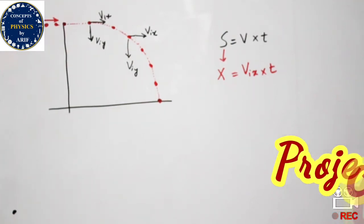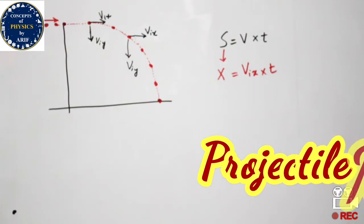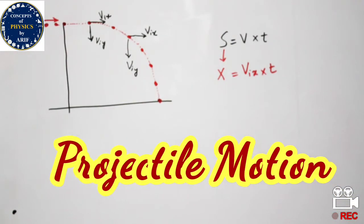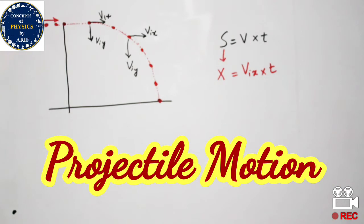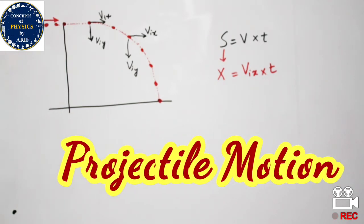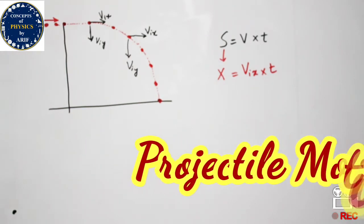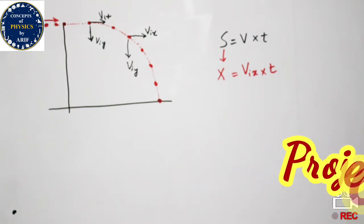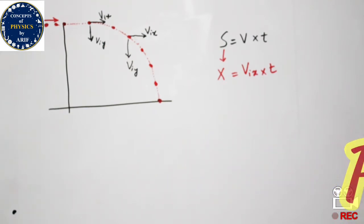Hi guys, welcome to my YouTube channel. In this video we will discuss about projectile motion. First of all we need to define projectile motion. Projectile motion is a two-dimensional motion with a constant acceleration due to gravity.